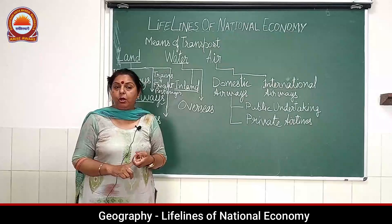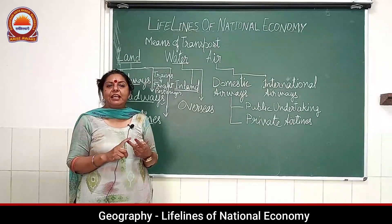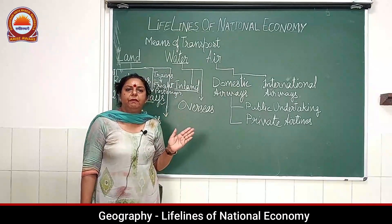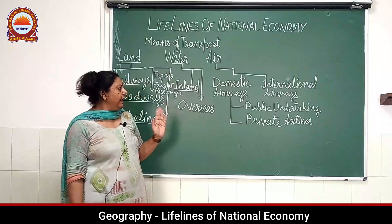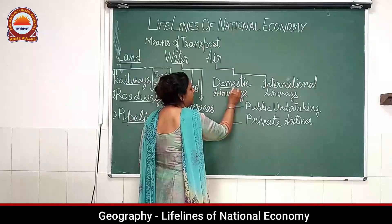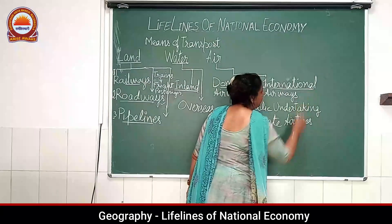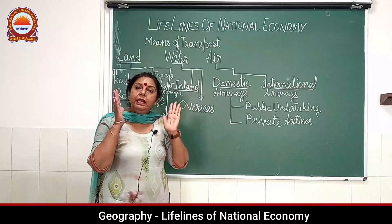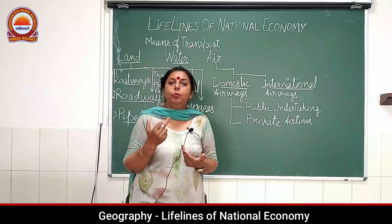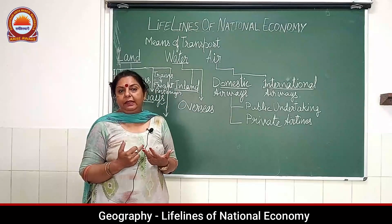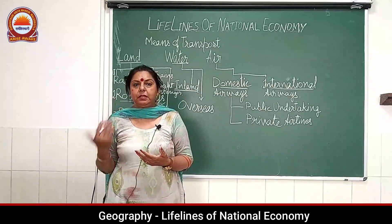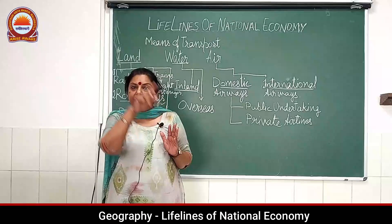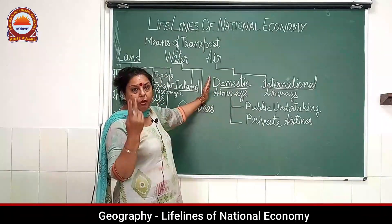Third comes airways — the fastest and most modern means of transportation. We have two types of airways: one is domestic airways and the other is international airways. By domestic airways, we mean traveling within a country — for example, traveling from Delhi to Mumbai, Mumbai to Hyderabad, or Hyderabad to Amritsar. These are all places within the sphere of India. If we are traveling within the country, this is called domestic airways.